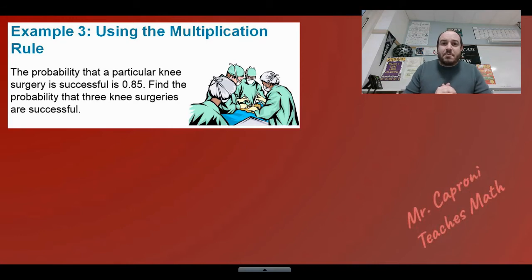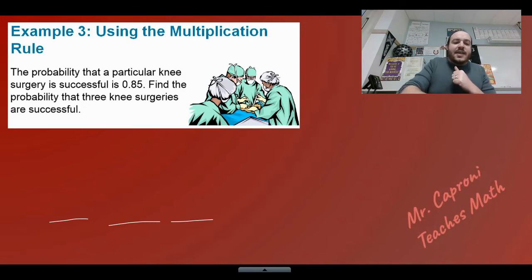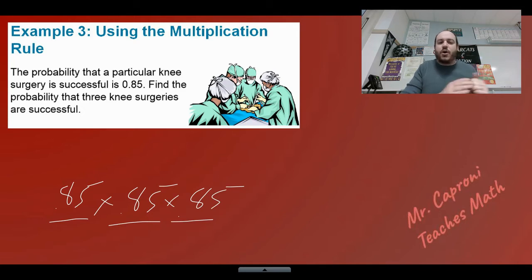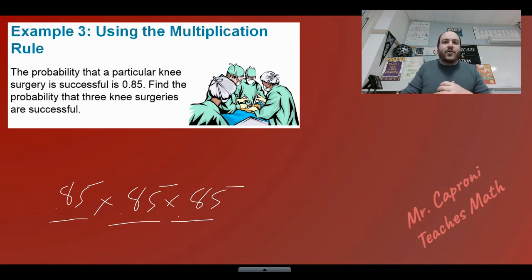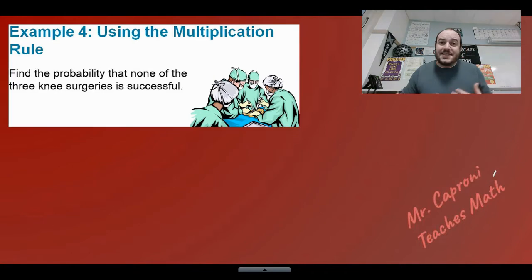Now for something more real-life: if any particular knee surgery has about an 85% chance of success (0.85), find the probability that three knee surgeries in a row are all successful. We consider the surgeries independent of each other — one person's success doesn't change the probability for the next. So we apply the independent multiplication rule: 0.85 times 0.85 times 0.85, which gives about 0.61, or a 61% chance all three surgeries go well.